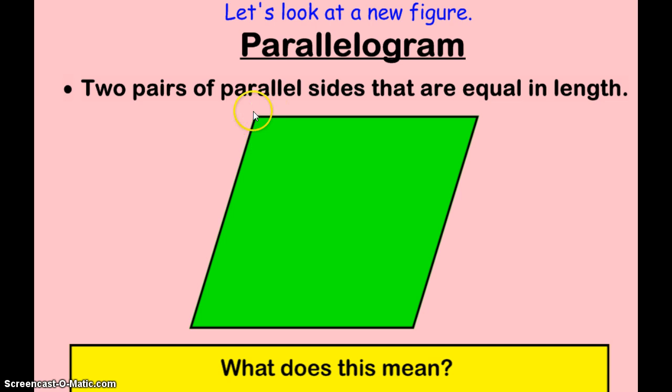A parallelogram can have some angles that are wider than right angles and some that are less than right angles, either obtuse or acute angles, and it will be called a parallelogram.